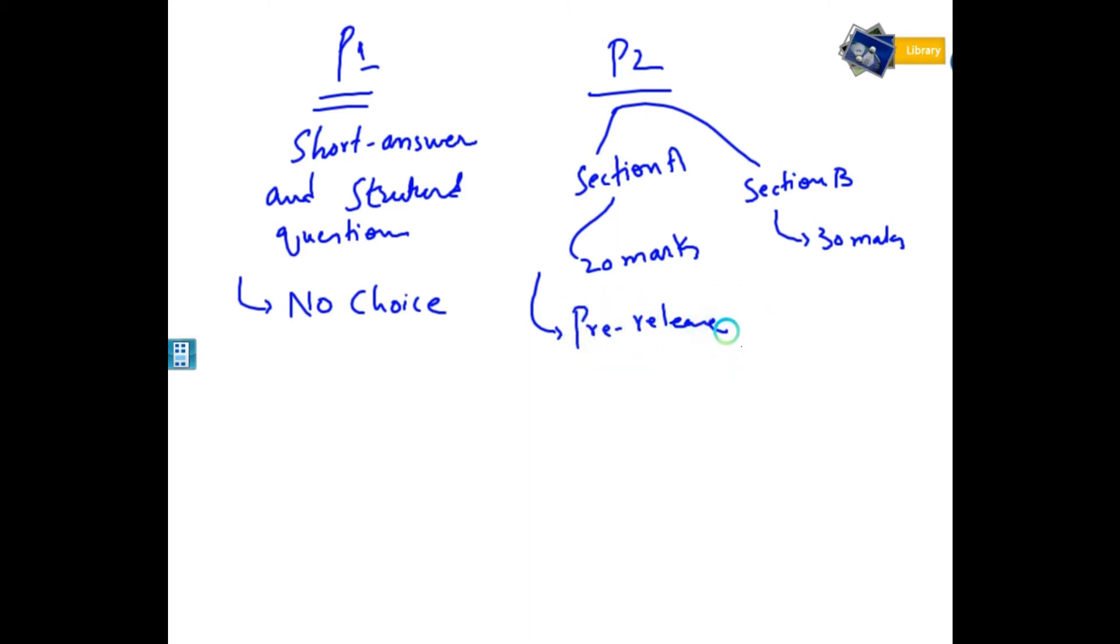Section A is of 20 marks. This is a paper which we call pre-release document. This is a document which is pre-released so students prepare the paper. It's the same paper for each exam which can be asked from this pre-release database.